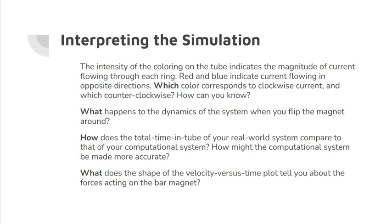How does the total time in tube of your real-world system compare to that of your computational system? And how might the computational system be made more accurate? My experimental and computational results are relatively the same. Errors might come from drag that's not accounted for in the code, or inconsistencies in the dimensions of my aluminum foil tube.